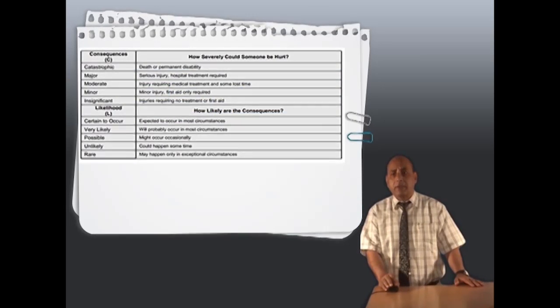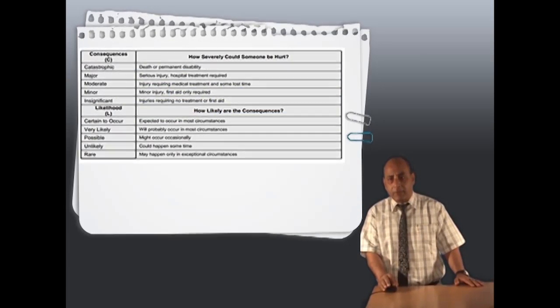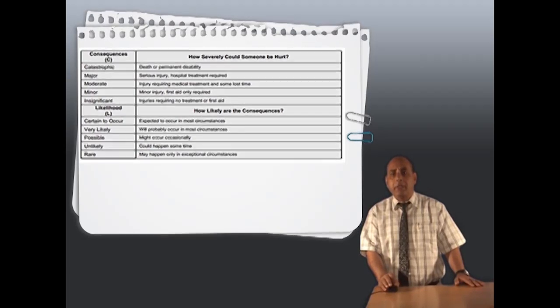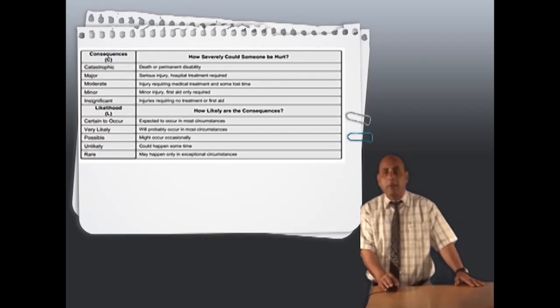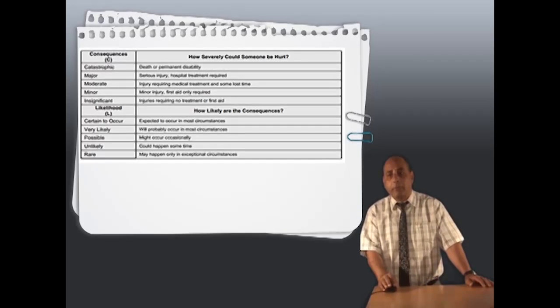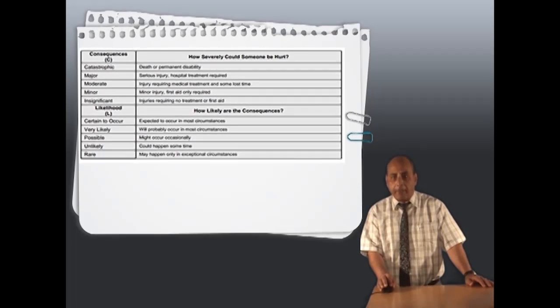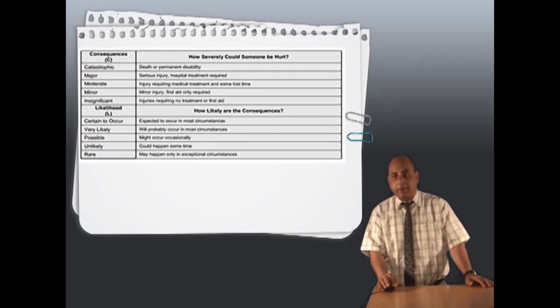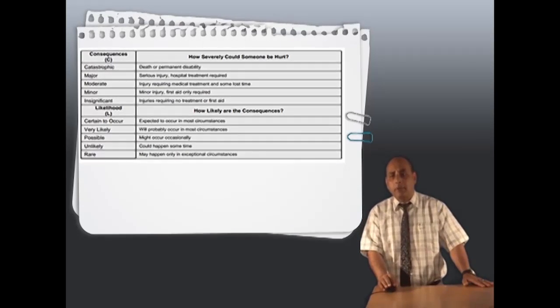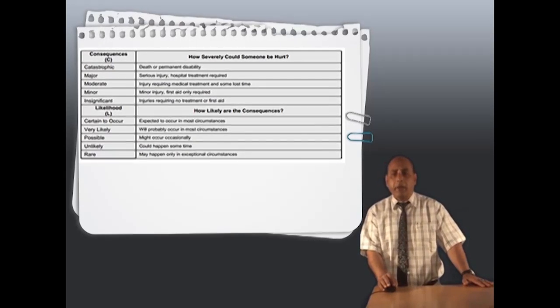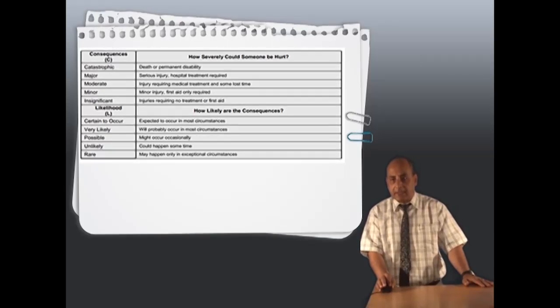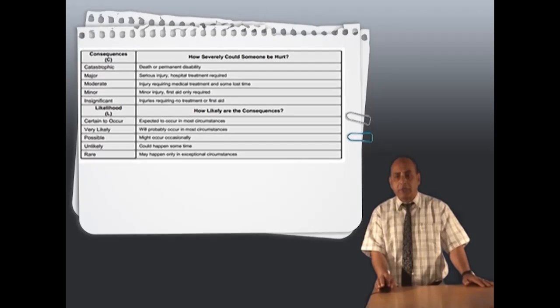Catastrophic means death or permanent disability. Major means serious injury requiring hospital treatment. Moderate means injury requiring medical treatment and some lost time. Minor means first aid. For likelihood: expected to occur in most circumstances is very likely; will probably occur in most circumstances is possible; might occur on occasion is unlikely.